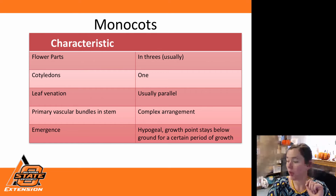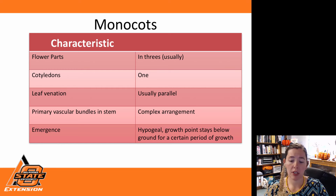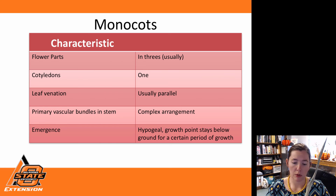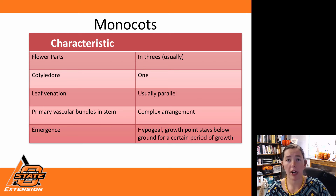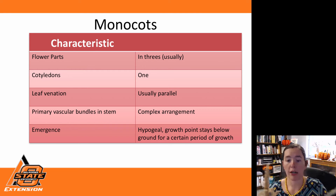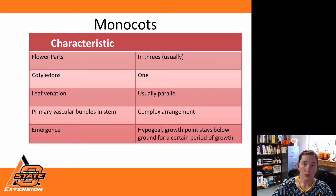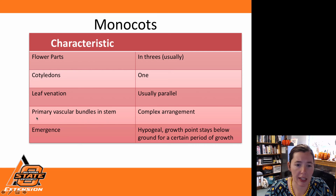Sometimes you'll hear dicots referred to as broadleaves, and I've had some people who thought things like corn and grain sorghum were actually broadleaves — they're not. They have a wider leaf than, say, wheat or bermuda grass, but it is still a grass plant, or monocot.